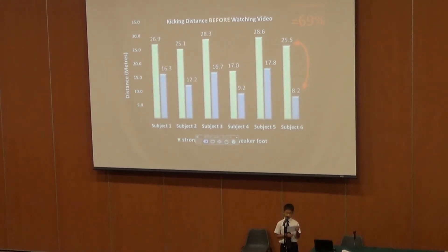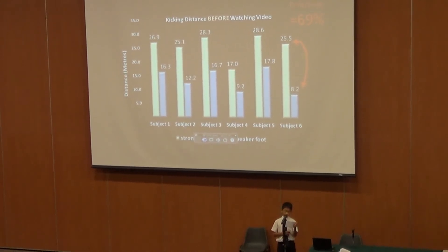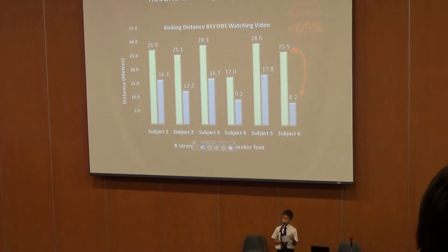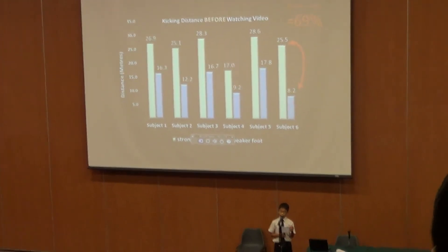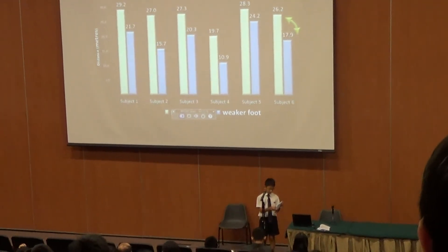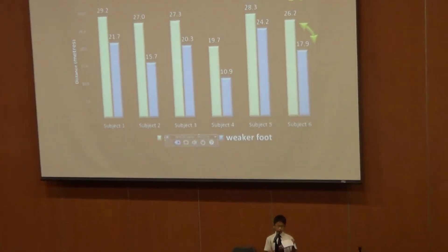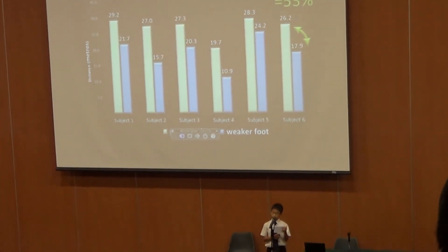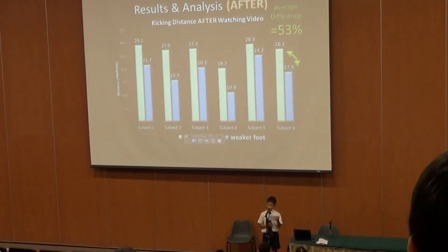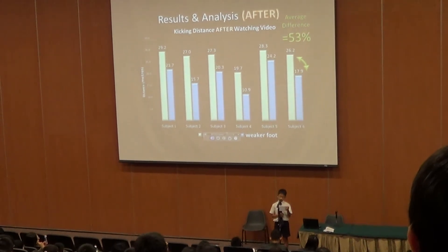This chart shows the kicking distance of the stronger and weaker foot of each subject before watching the flipped video. The results show a large difference between the stronger and weaker foot — the average percentage difference was 53%. After watching the video, the results show that most of the subjects improved and the difference between their stronger and weaker leg decreased.